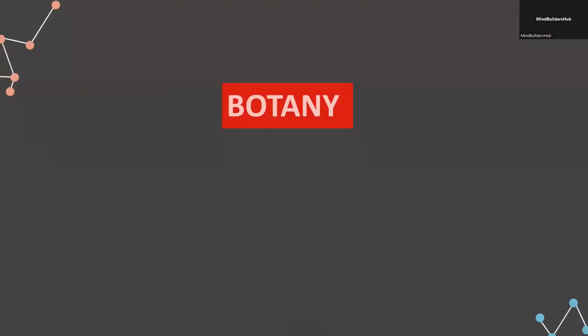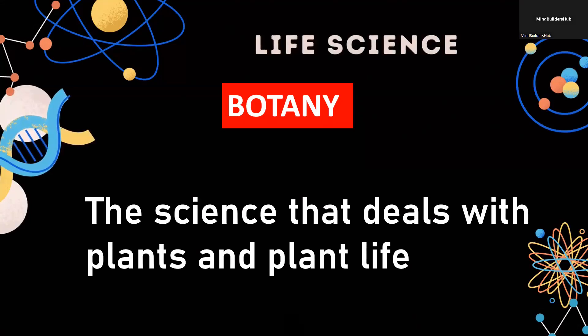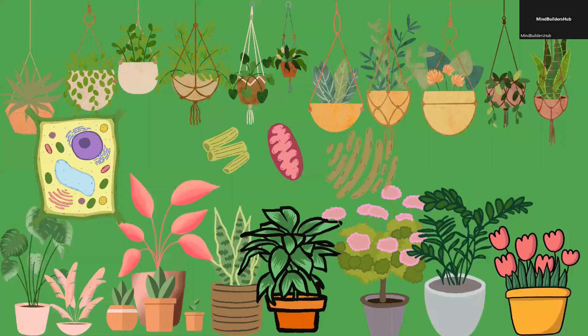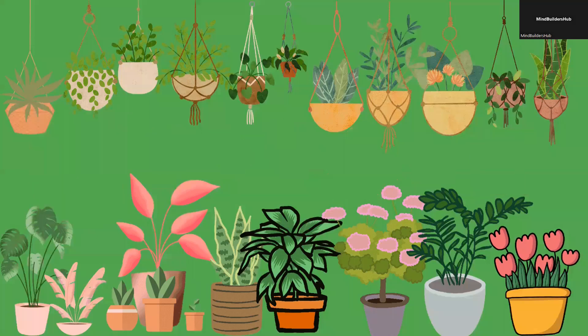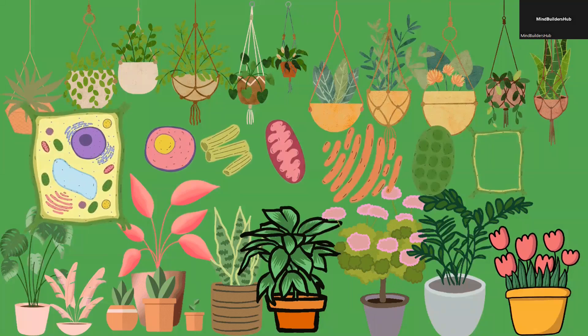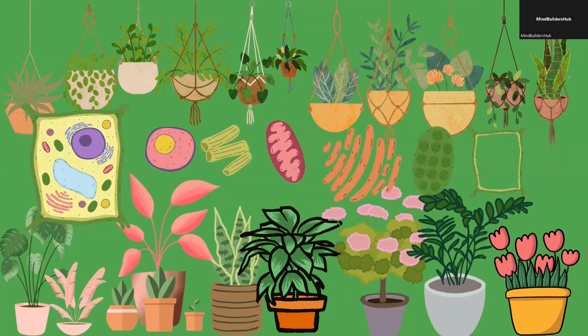So for botany, it is a science that deals with the plants and even their life. We're going to talk about their cells, what makes it different from animal cells, and the different species of plants. We're going to classify them accordingly.